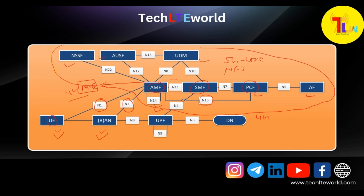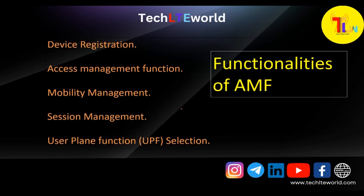N14 is the interface through which one AMF can be connected with another AMF. You can also see the connection between AMF and the RAN part, meaning your NR (New Radio), which is the N2 interface. Now let's move forward and discuss some functionalities of AMF.